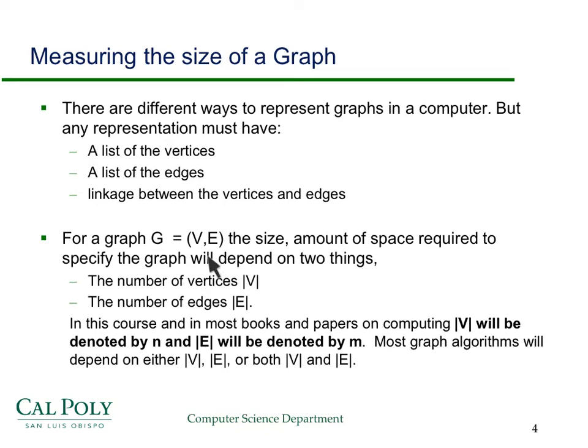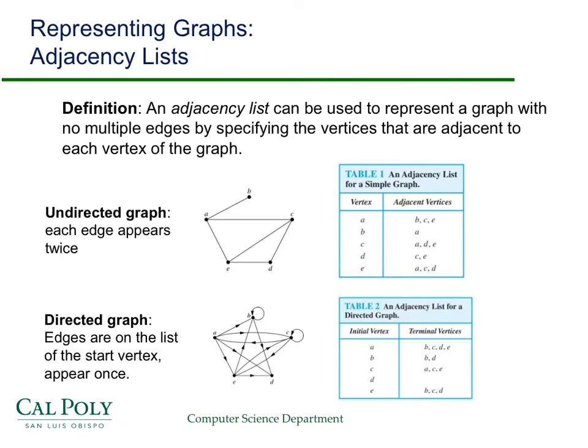The point here is that we're going to be concerned with the size of the problem. So in the case of a graph, if we're working with a graph, the size is going to be some function of the number of vertices and some function of the number of edges. In most books and papers, and we will do the same thing here, the number of vertices will be denoted by N, and the cardinality of the edges is represented by M. In most of the graph algorithms, their performance or computational complexity is going to depend either on the number of vertices or the number of edges, or in lots of cases, both the number of vertices and the number of edges.